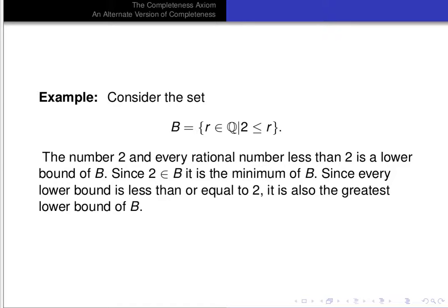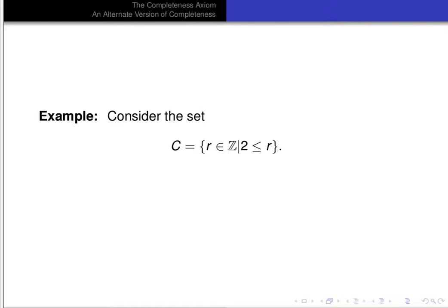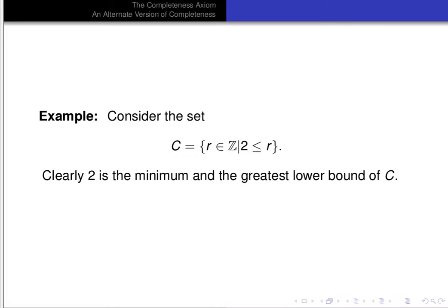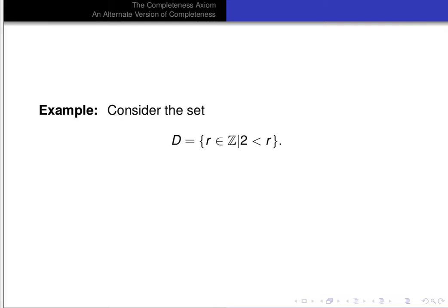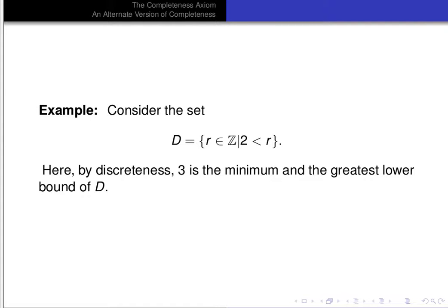A minimum of a set, if it exists, will be the greatest lower bound. But a set does not have to have a minimum in order to have a greatest lower bound. In the integers, if C is the set of all integers r greater than or equal to 2, then 2 is clearly the minimum and greatest lower bound of C. But for set D — all integers strictly greater than 2 — by discreteness, 3 would be the minimum, and it would also be the greatest lower bound.